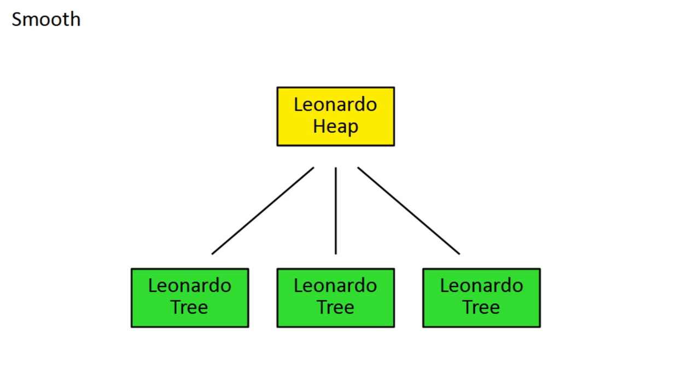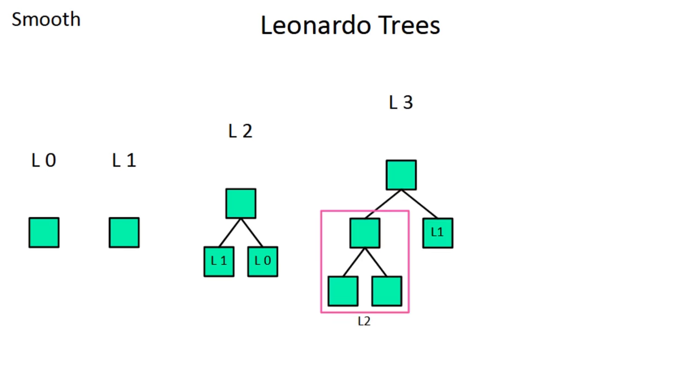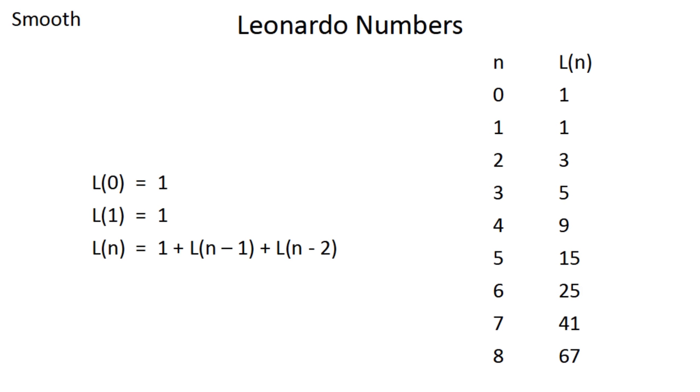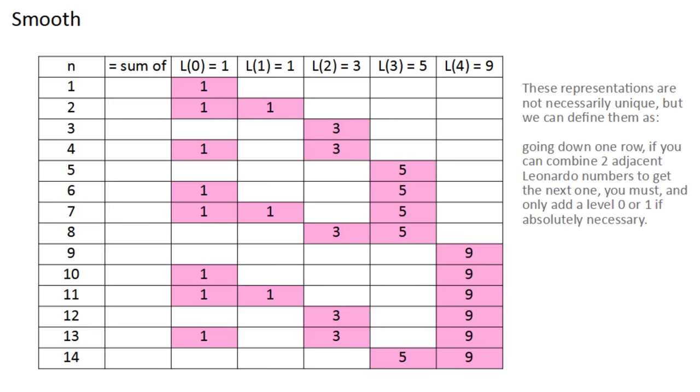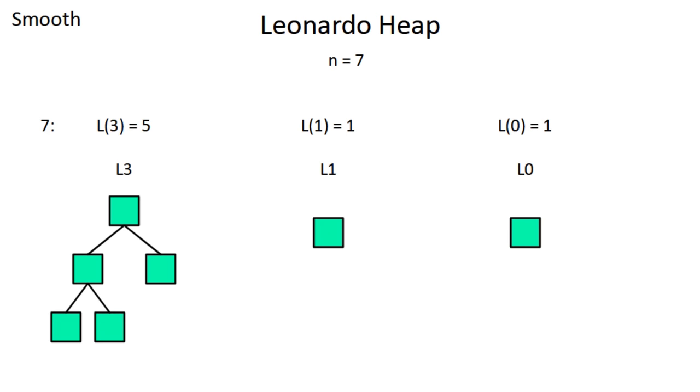Smooth sort does this using something called a leonardo heap, which is made of leonardo trees. A level 0 or 1 leonardo tree is just a single node. For any other level, you just have a node with the previous two levels as its sub-trees, with the bigger one first. This means the size of a leonardo tree can only take specific values. These are called the leonardo numbers, and each one is 1 plus the sum of the previous two.